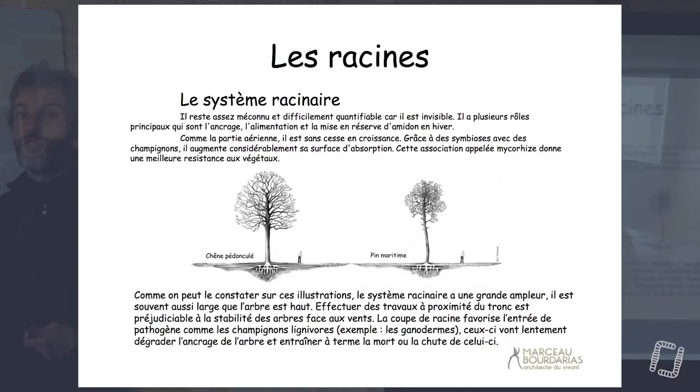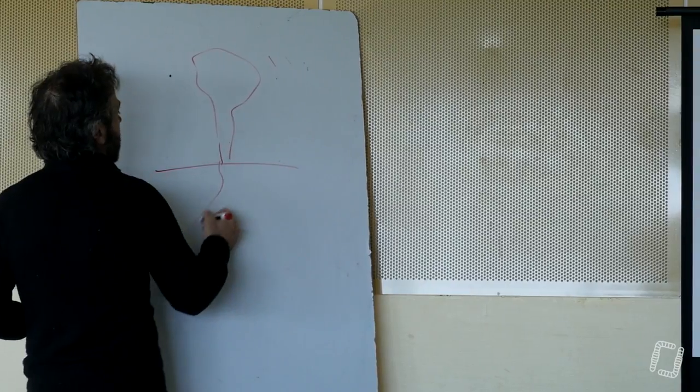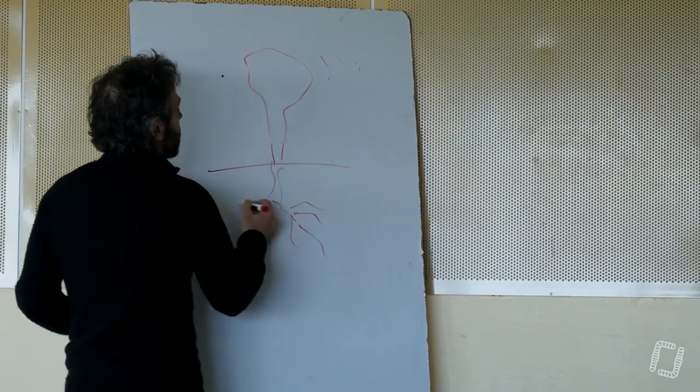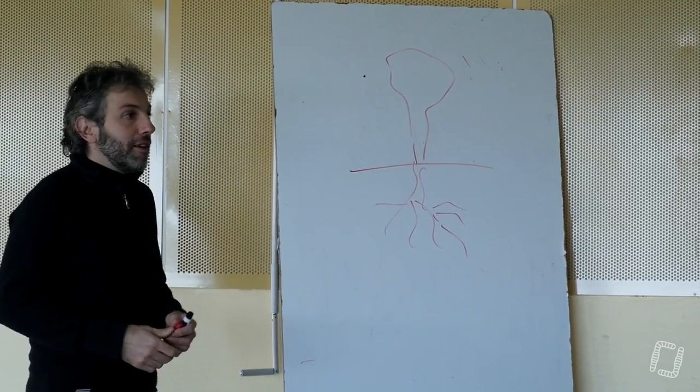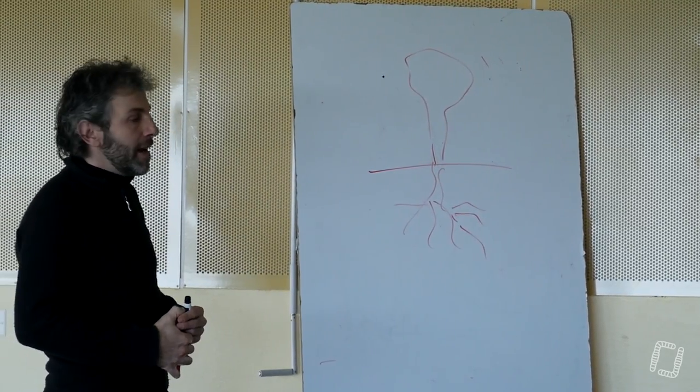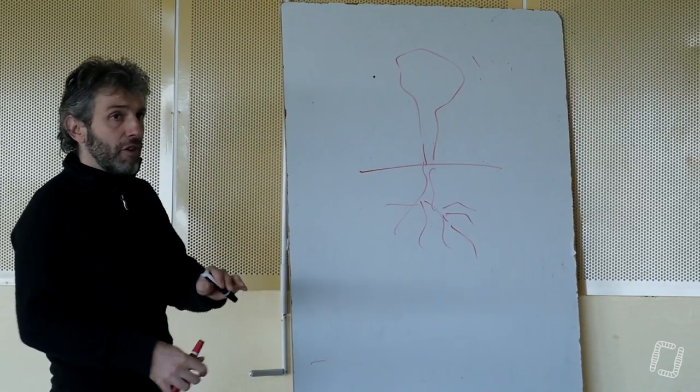Donc on nous avait vendu à l'école que quand on a un arbre, on a à peu près le même système racinaire en dessous. Au niveau du volume de connexion, on a peut-être quelque chose de similaire, mais par contre, au niveau architecture, ça n'a rien à voir.